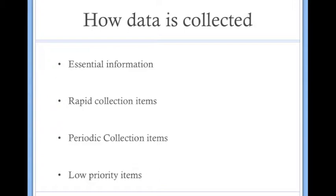Second is rapid collection items, which follow right behind essential information data. Rapid collection also have a high priority because they are usually on a larger range and are needed in short notice.